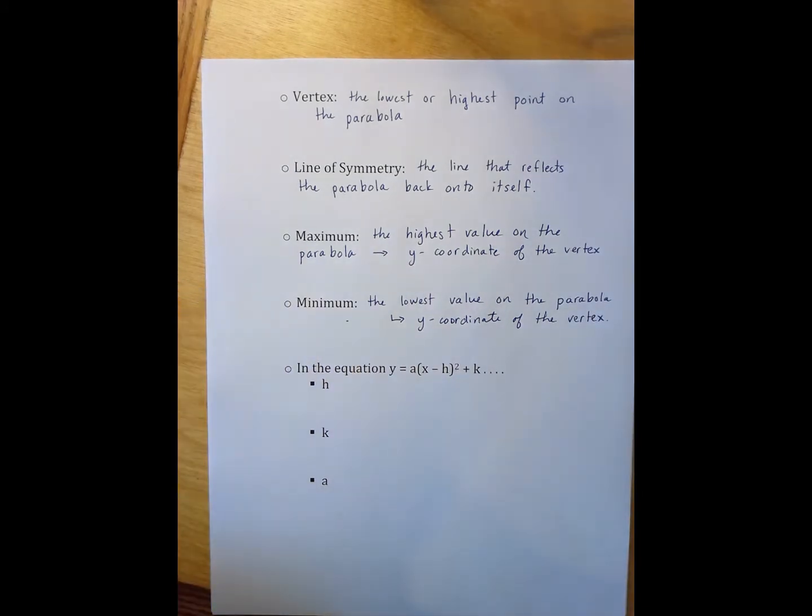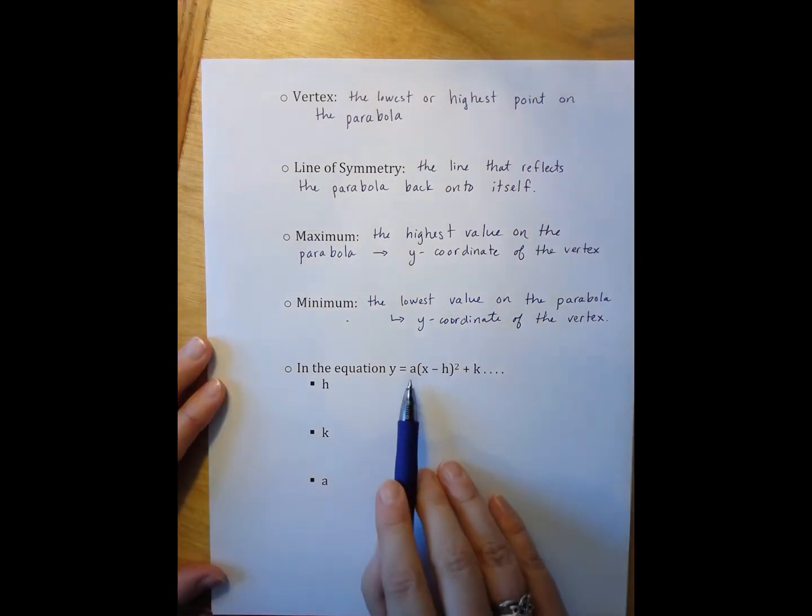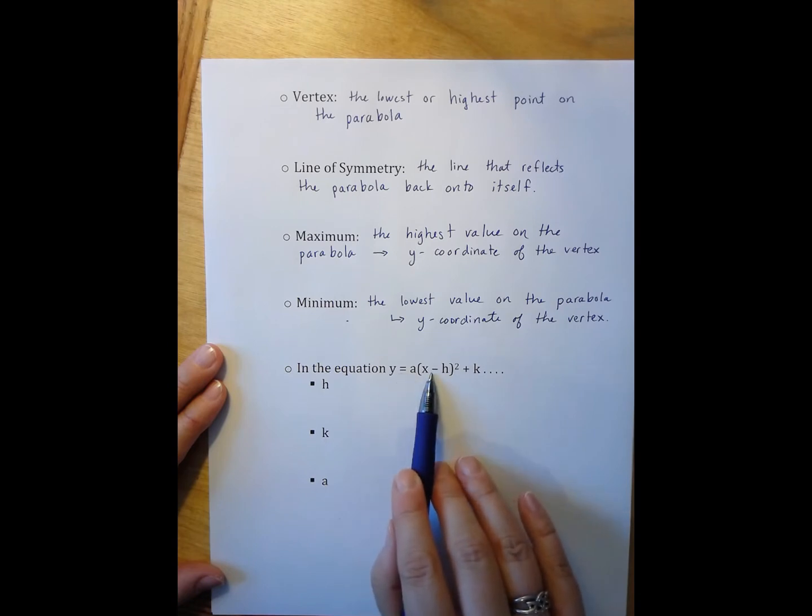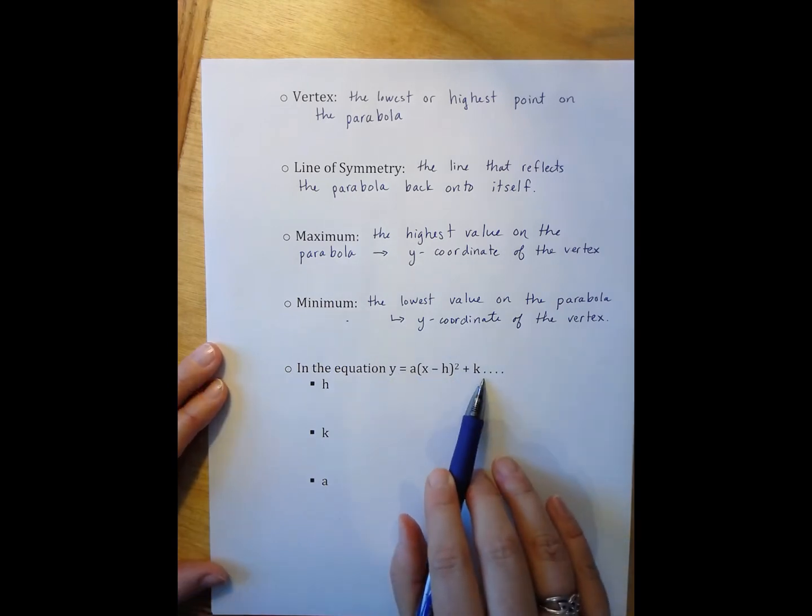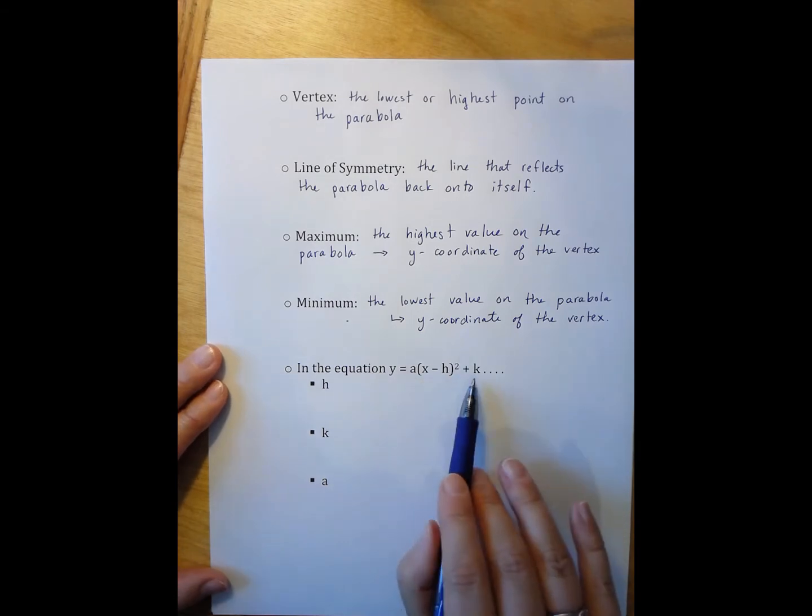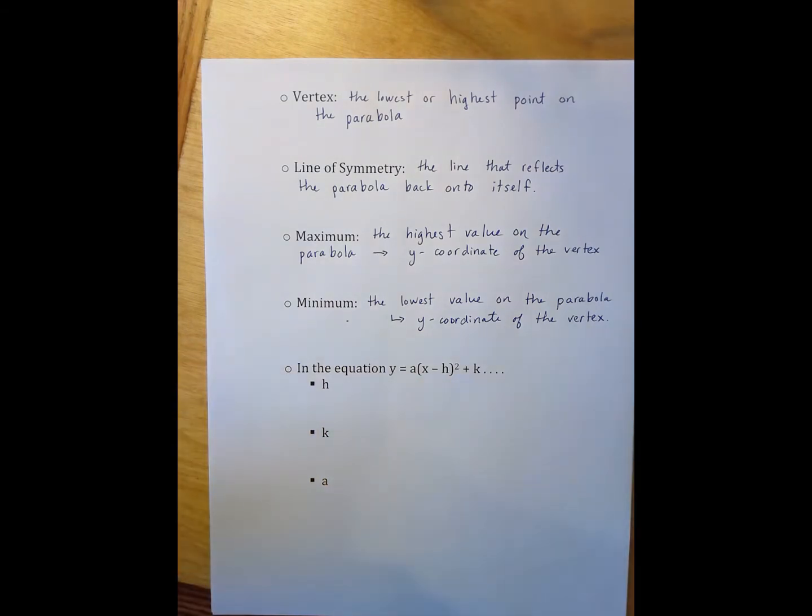Now, one of the other pieces of information that you have covered at this point in the module is what each of the letters in the standard form of, sorry excuse me, the vertex form of parabolas represent. Each of these letters actually represent the information we talked about in the first page of our notes, which are the transformations.